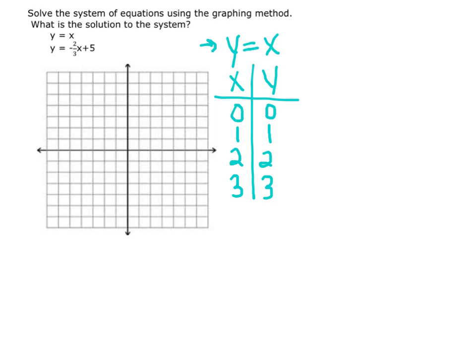We need to do the same thing for the second equation. We have y equals negative 2 thirds x plus 5. Again, making an xy table using x equals 0, 1, 2, and 3.